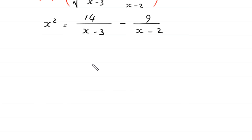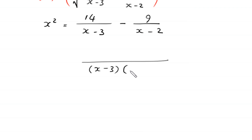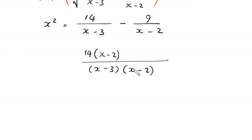Now we take the LCM of (x minus 3) and (x minus 2), which is (x minus 3)(x minus 2). Dividing the LCM by (x minus 3) gives (x minus 2), so we multiply 14 by (x minus 2) to get 14 times (x minus 2). Dividing the LCM by (x minus 2) gives (x minus 3).